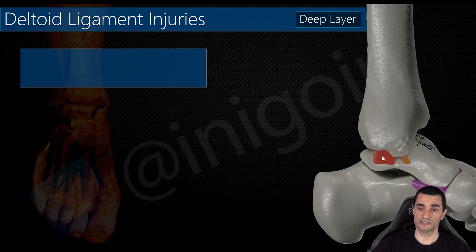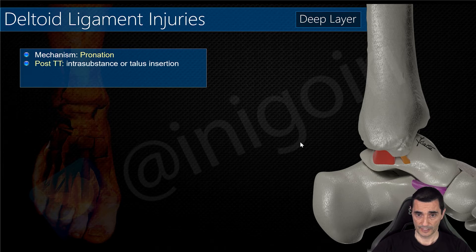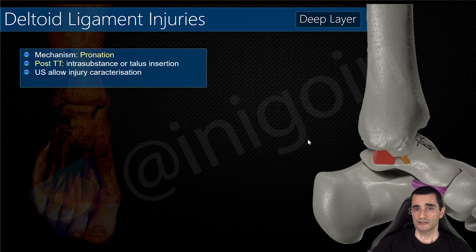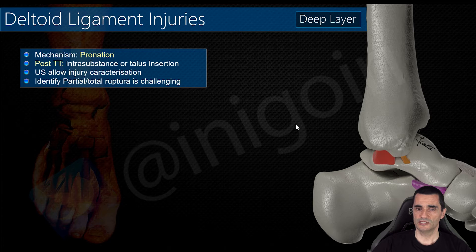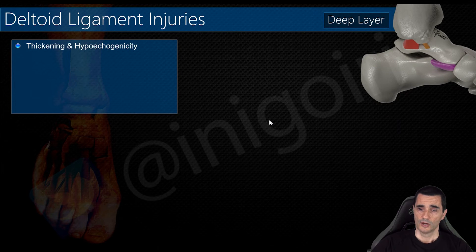We have two layers: the deep layer with the posterior tibiotelar ligament and the anterior tibiotelar ligament. The deep layer is usually affected in pronation — pronation of the ankle stresses the talus and these two components may be affected. The location of the injury is usually in the middle of the ligament or at its talar insertion; injury at the tibial insertion is very uncommon. Ultrasound allows us to properly locate the injury, but distinguishing between total and partial rupture can be challenging.